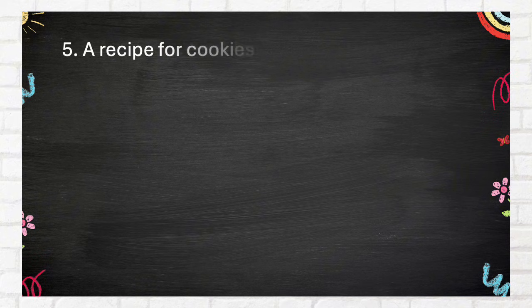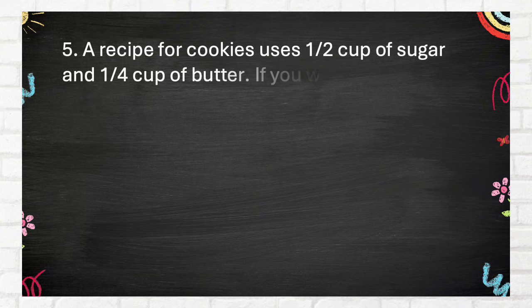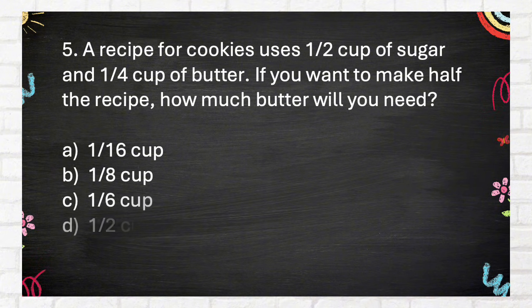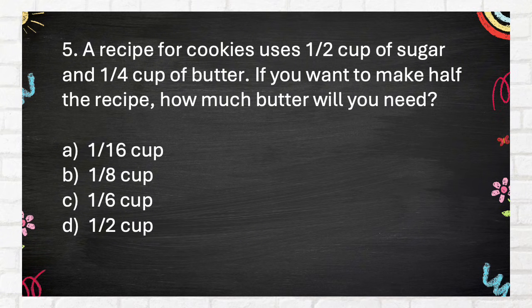Number 5. A recipe for cookies uses one-half cup of sugar and one-quarter cup of butter. If you want to make half the recipe, how much butter will you need? A. One-sixteenth cup. B. One-eighth cup. C. One-sixth cup. D. One-half cup.